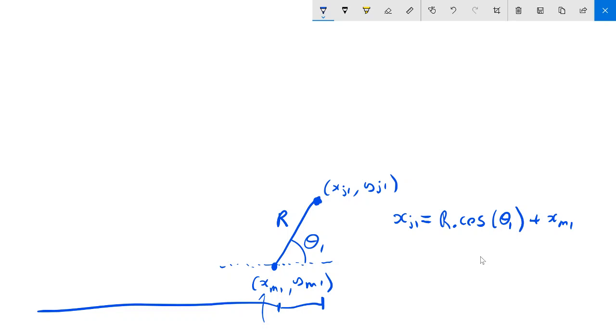Exactly the same process for the Y position of joint 1. So I can write YJ1 equals R, but it's not cosine theta anymore because I'm not looking at the X component. I'm looking at the Y component, which is of course sine theta 1. And once again, I have to take this position up here, up the page. So it's going to be plus YM1.